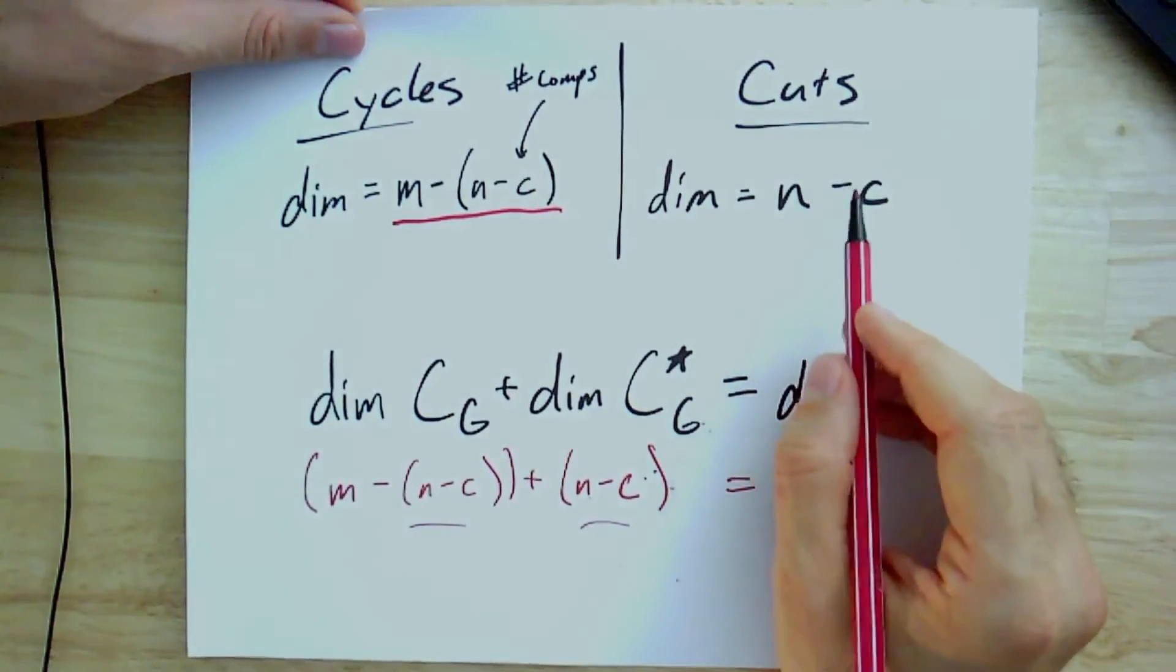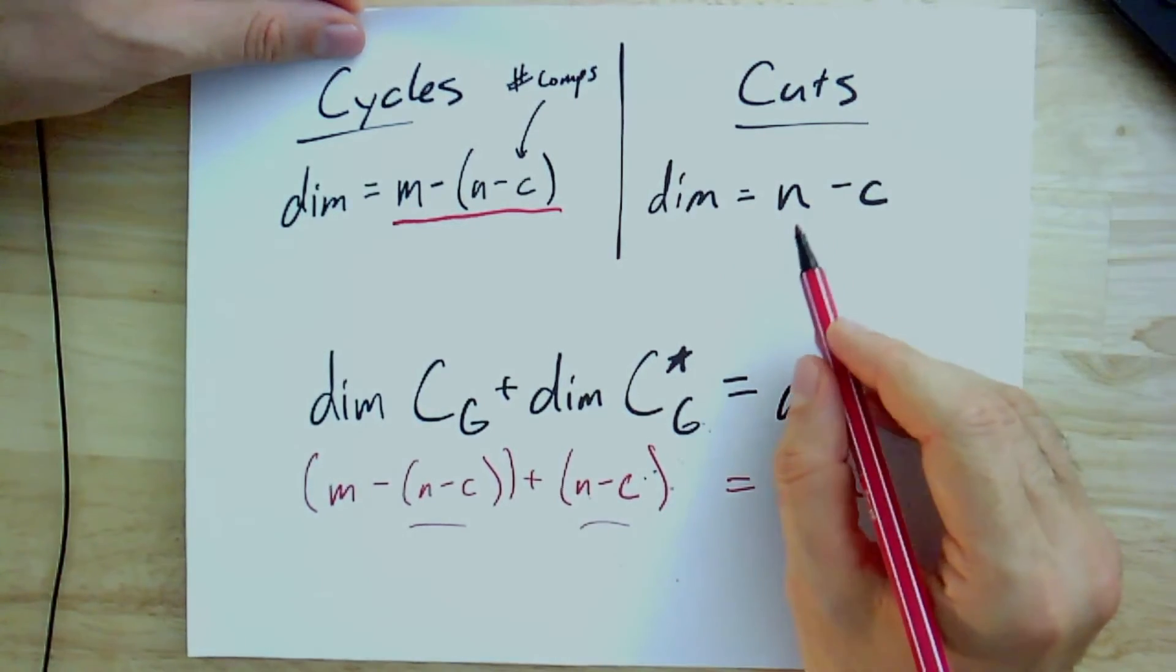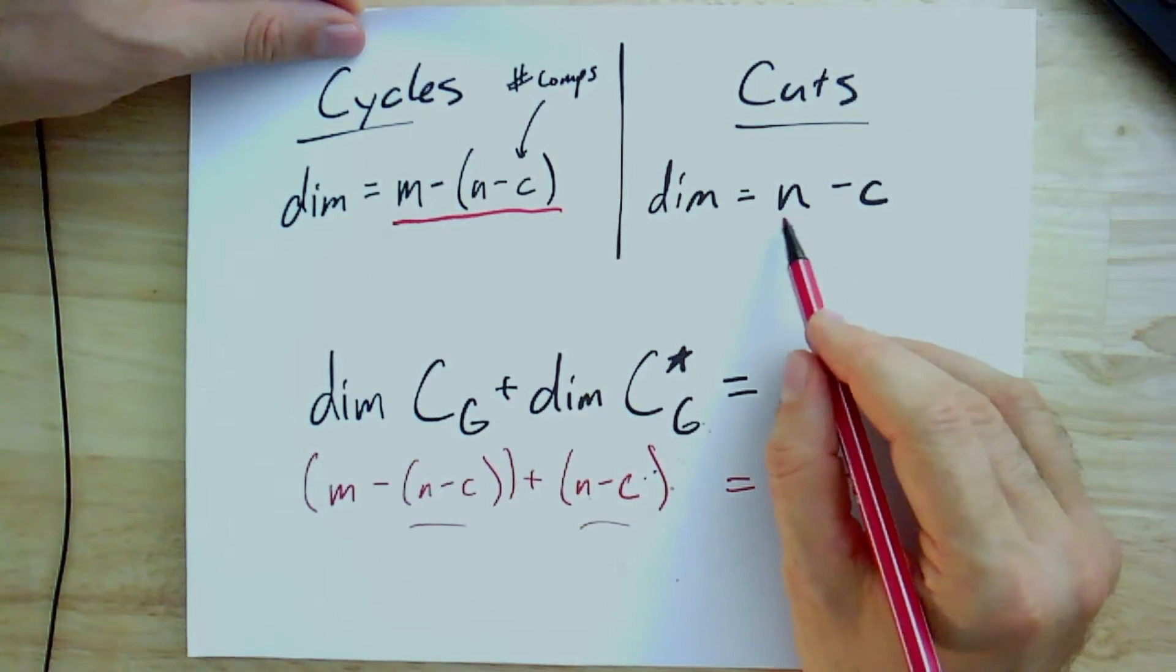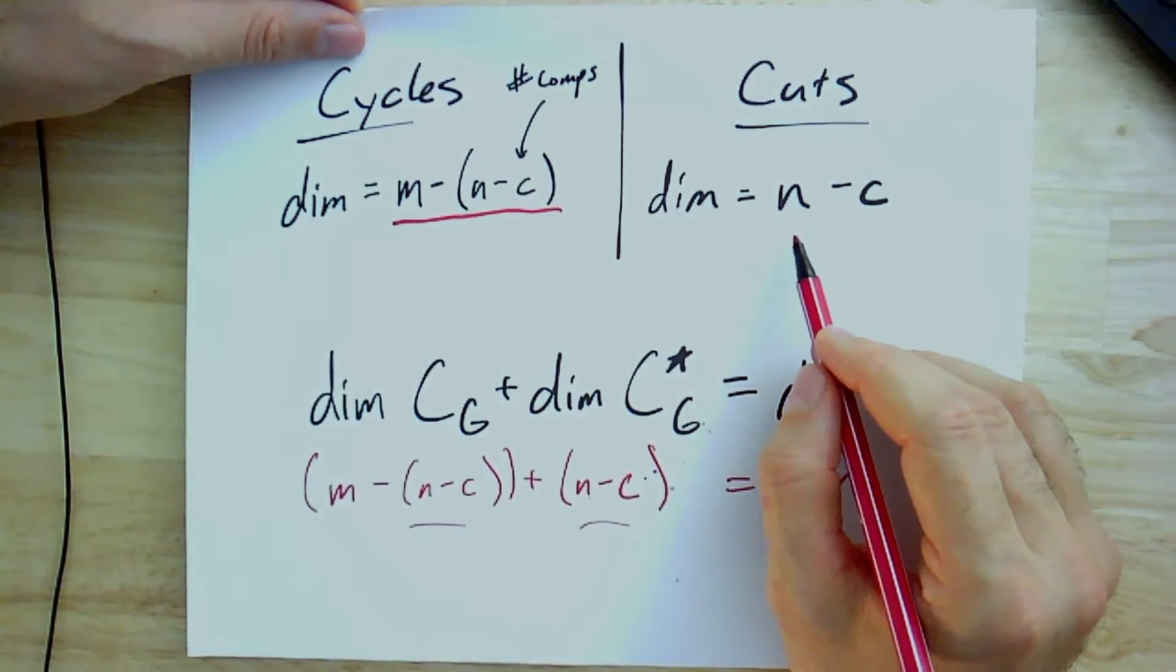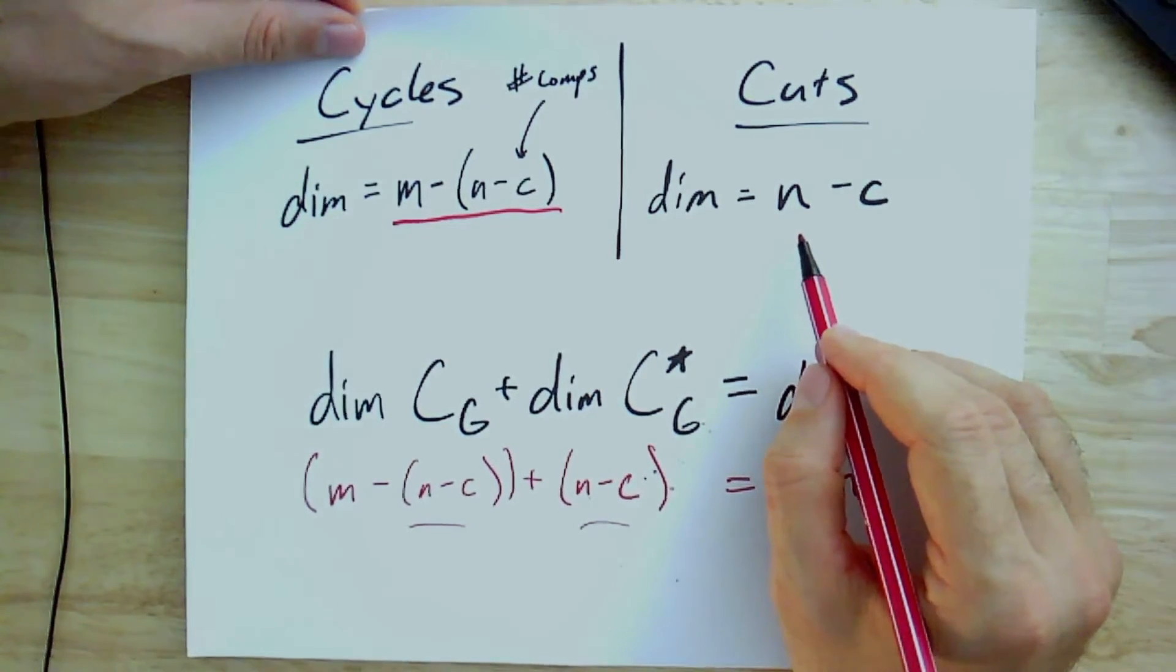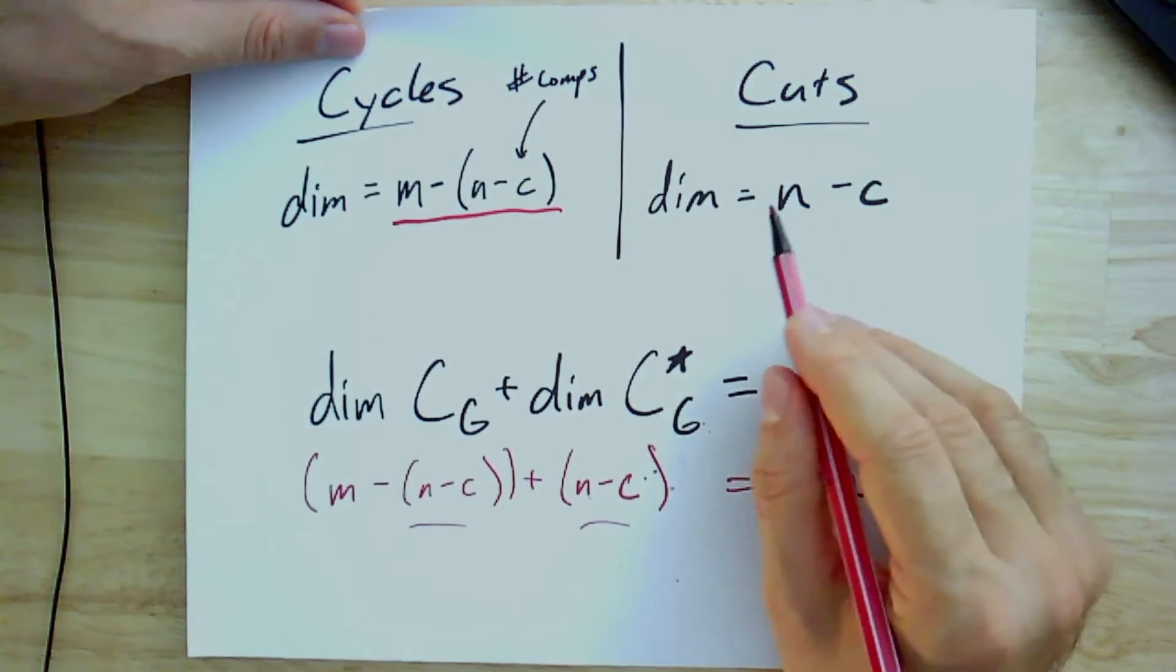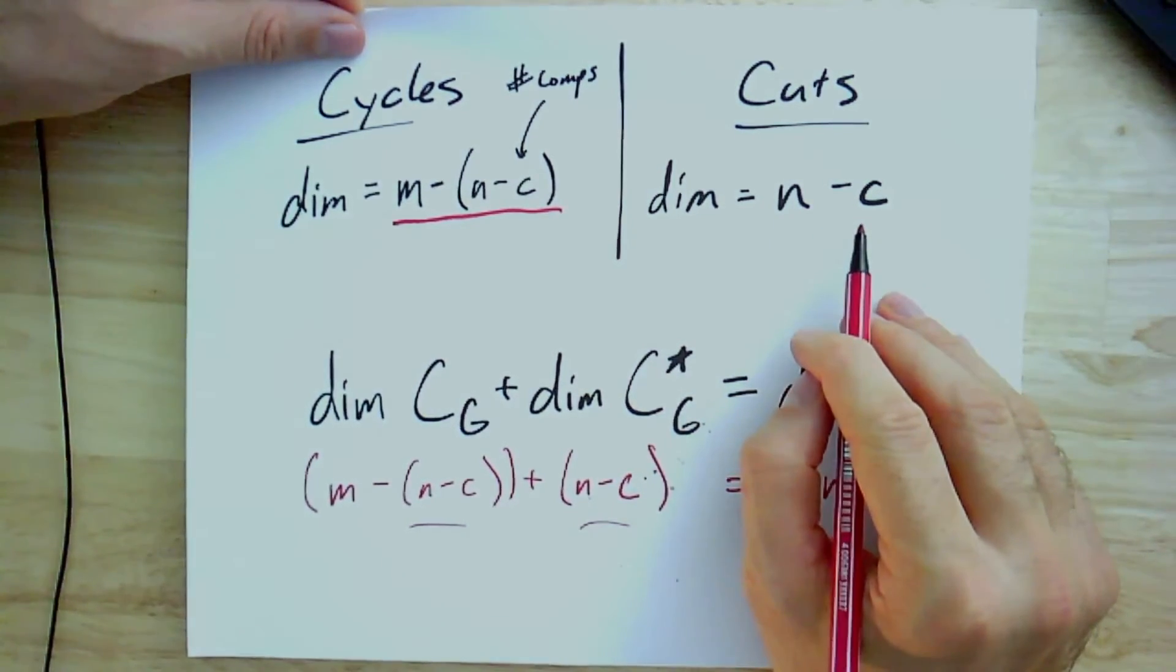And for cuts, a similar thing happens. So I mentioned in the last video when talking about the cut space that you might think that the dimension should be n, right? Because for each vertex, I could look at the edges coming out of that one vertex as a cut. And that might seem like those cuts should generate the space. They do generate it, but they're not independent.